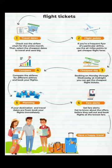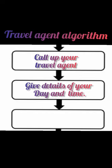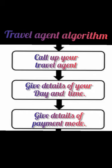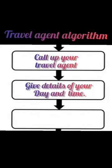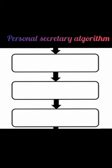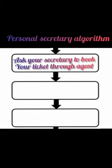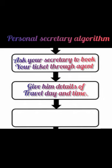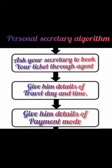Let's say that you need to book an air ticket to Delhi. Here are three different algorithms you might follow. First, the travel agent algorithm: you call up your travel agent, give details of your day and time of departure and arrival, and give details of the payment mode. Second, the personal secretary algorithm: you ask your secretary to book your ticket through the travel agent, give him the details of travel day and time, and give him details of the payment mode.